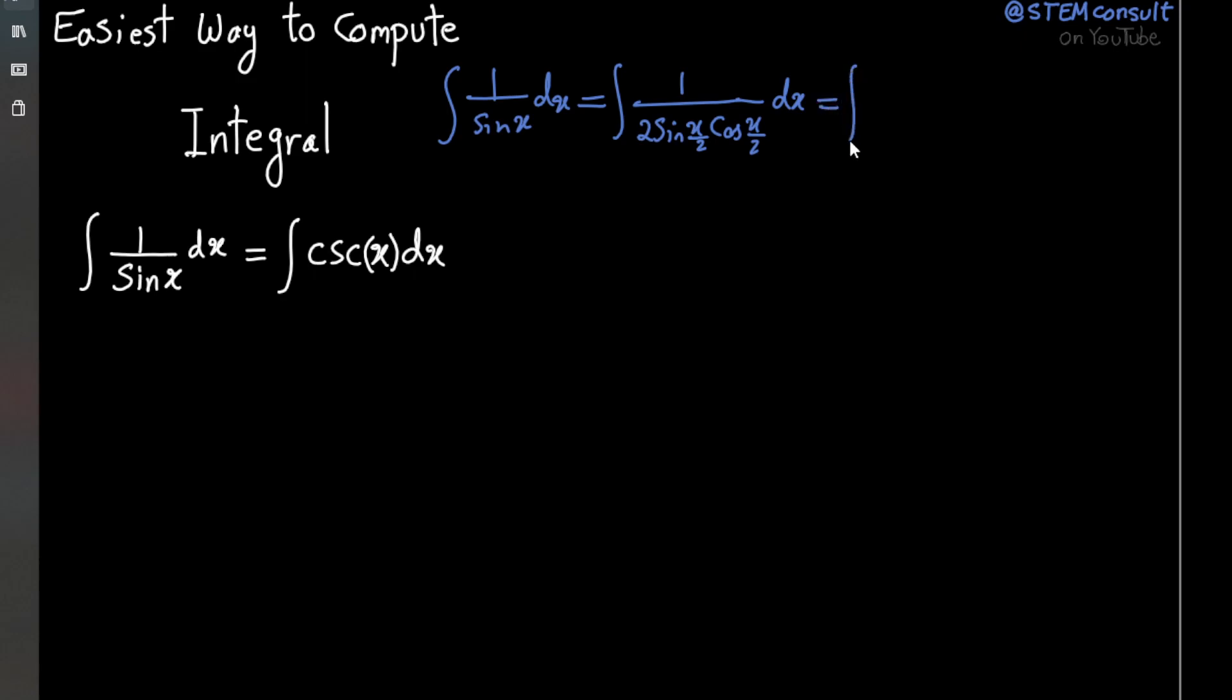Let's also multiply the denominator by additional cosine x over 2 and divide by that additional cosine x over 2, so therefore it becomes sine x over 2 cosine x over 2, and then of course cosine squared x over 2. So I didn't change anything, I just played a little trick, dx.